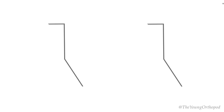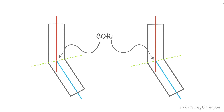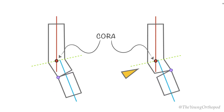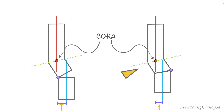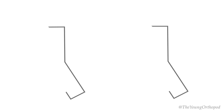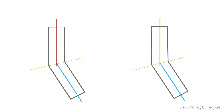If the osteotomy is made at a different level from the CORA on the bisector line and angular correction is performed around a point on the osteotomy line, a translational deformity is produced. The amount of translation is greater for an opening wedge than for a closing wedge osteotomy. If the opening or closing wedge osteotomy is made through the opening or closing wedge point, irrespective of the orientation of the osteotomy, no translational deformity will arise.